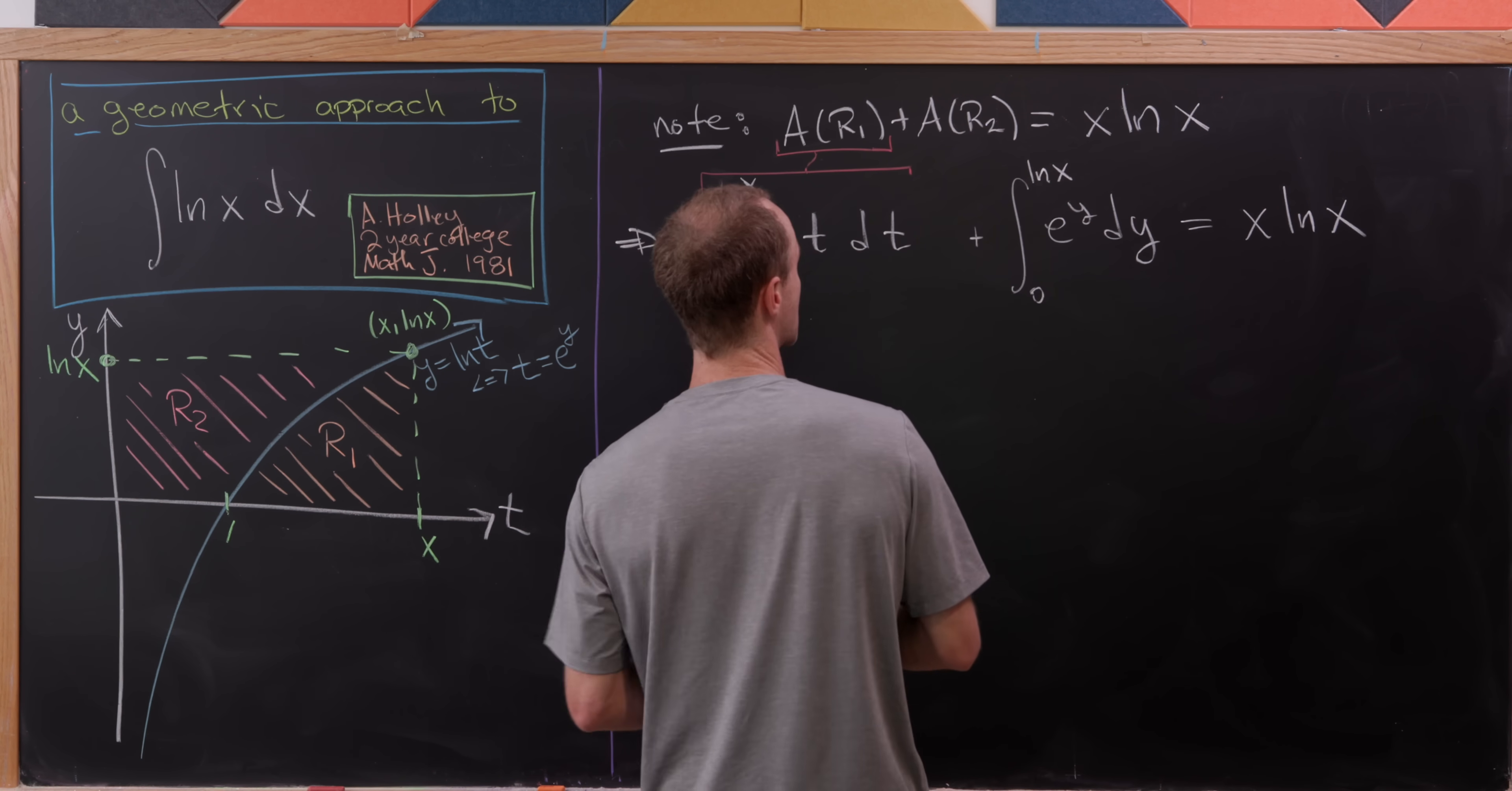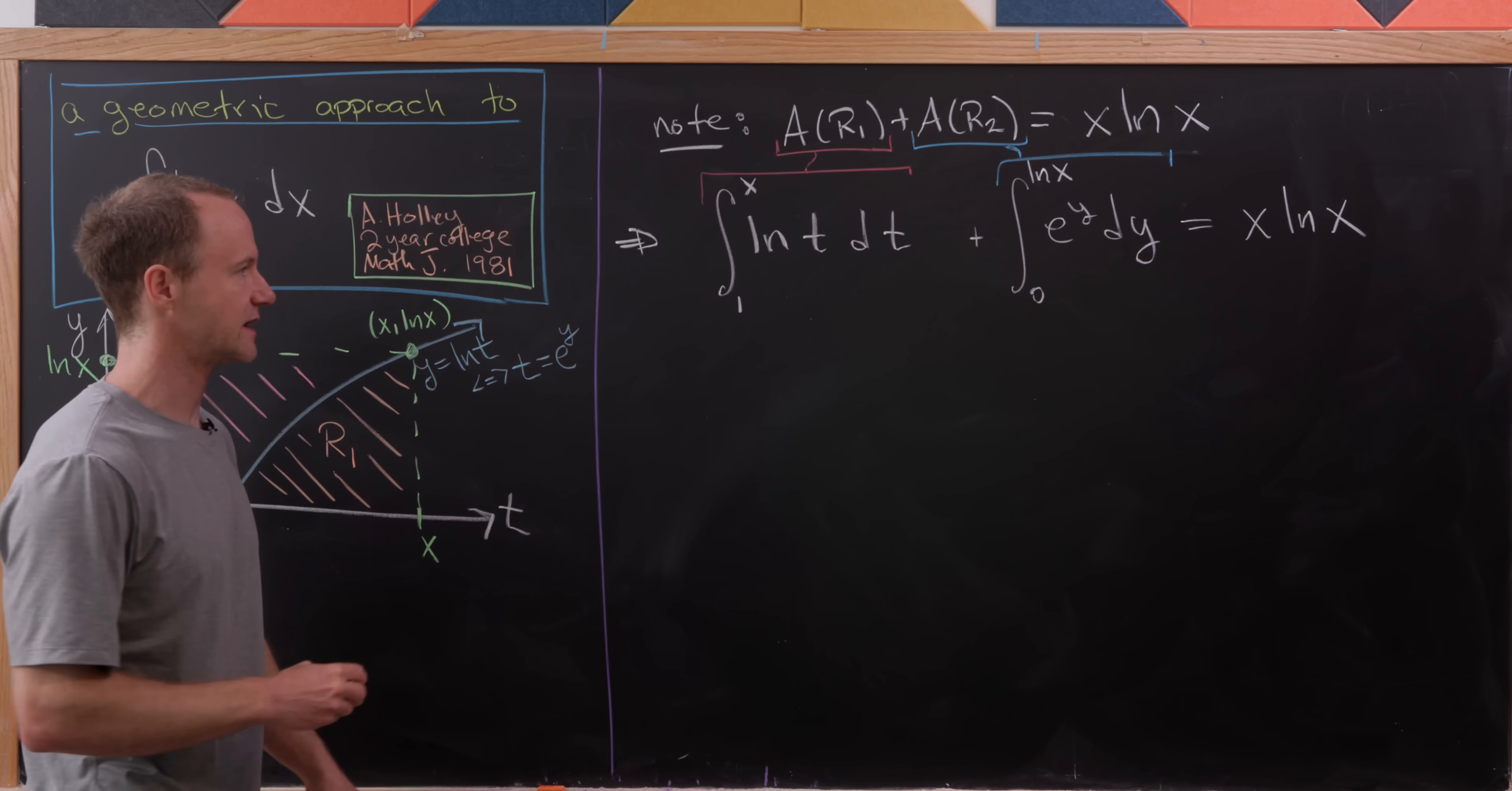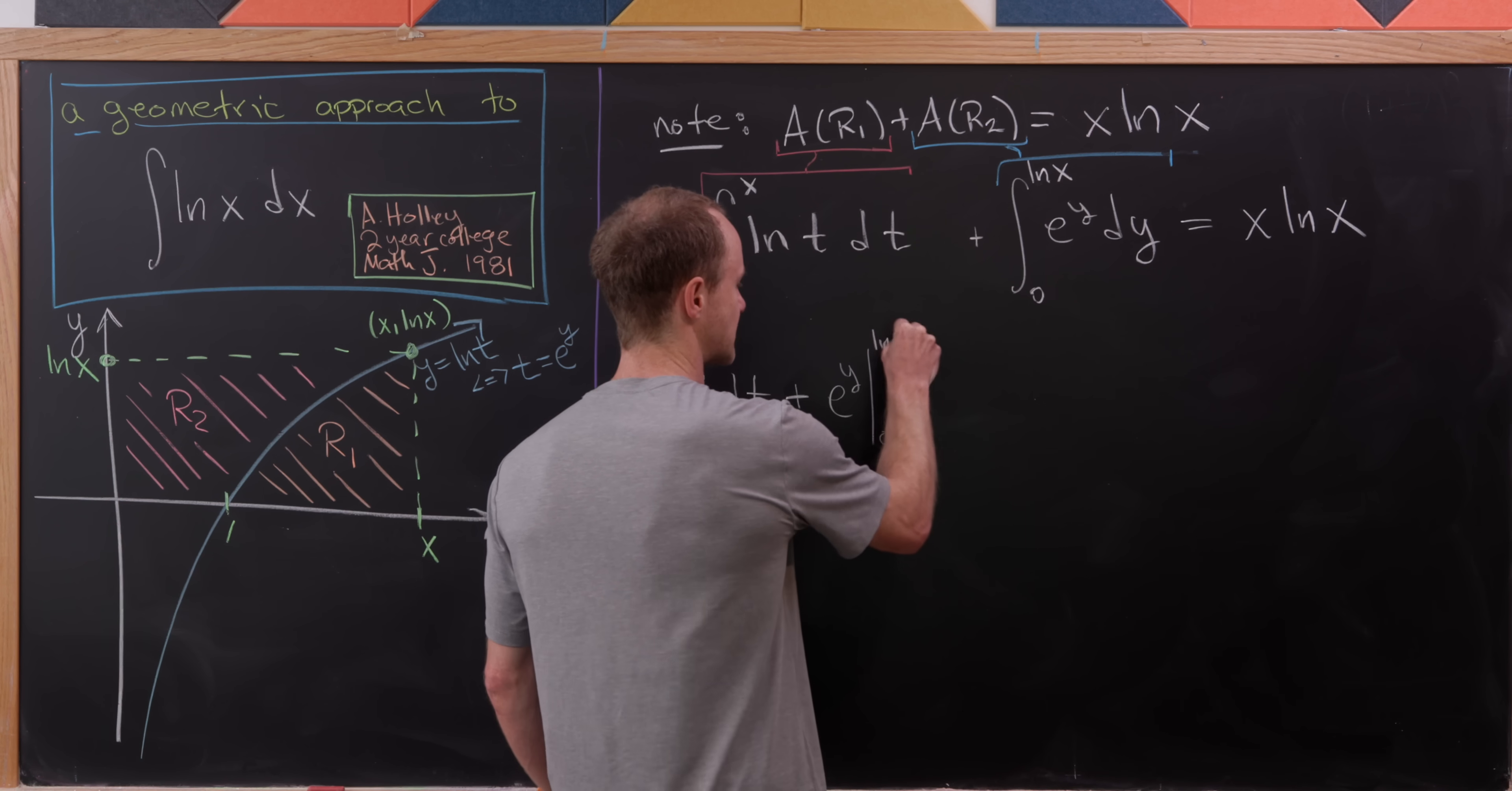Let's also bring our color coding down. This area of region 2 is this bit right here. But now let's notice that this first one is the one which is our goal, and this second one is easy to calculate. So bringing this down, we have the integral from 1 to x of natural log of t dt is equal to, taking the antiderivative here, plus taking the antiderivative right here will be e to the y evaluated from 0 to natural log of x. That's going to be equal to x natural log of x.